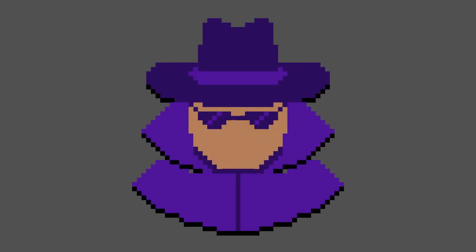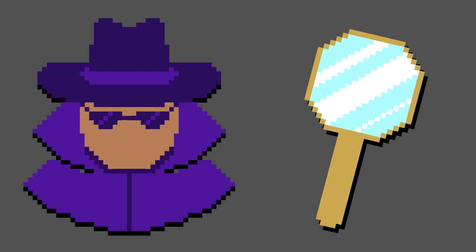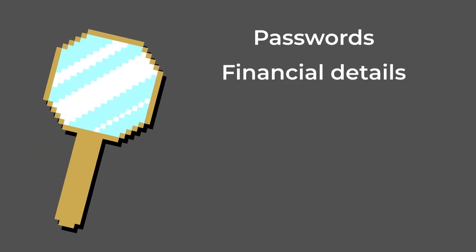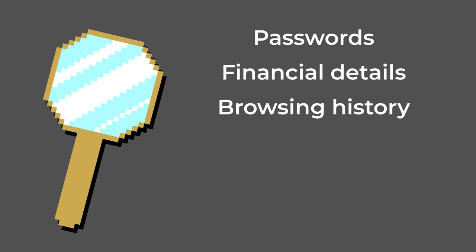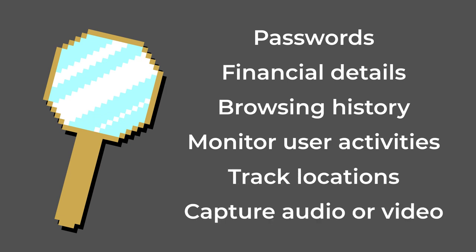Spyware, or spying software, is a term used to describe any malware that is designed to covertly gather information from a user's device without their knowledge or consent. It acts like a super spy, monitoring user activity to gather information. This information can include sensitive data such as passwords, financial details, browsing history, and more. Spyware can also monitor user activities, track location, and capture audio or video.